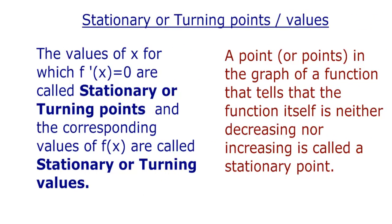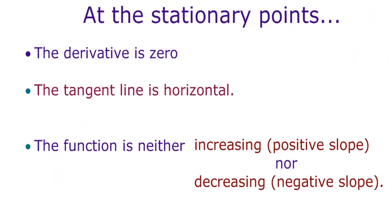The values of x for which f'(x) is equal to 0 are called stationary points or turning points, and the corresponding values of f(x) are called stationary or turning values. A point in the graph of a function where the function is neither decreasing nor increasing is called a stationary point. At stationary points, the derivative is 0, the tangent line is horizontal, and the function is neither increasing nor decreasing.